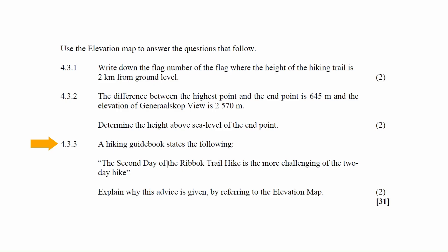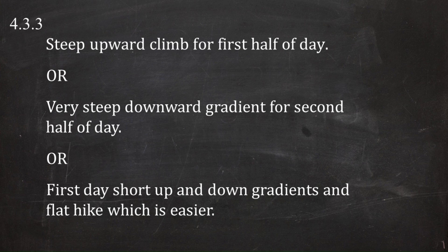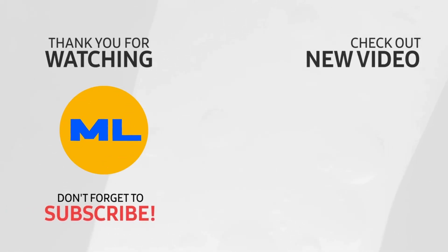In question 4.3.3, the hiking guidebook states that the second day of the Reebok trail is the more challenging of the two. From the elevation map, the second day features a steep upward climb for the first half and a steep downward gradient for the second half. By contrast, the first day has short up-and-down gradients and a flat section, making it easier. Any one of these explanations is accepted as the correct answer. Thank you for watching; subscribe for more videos like this.